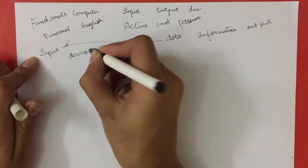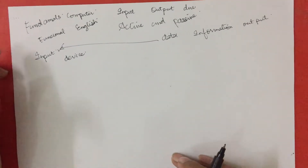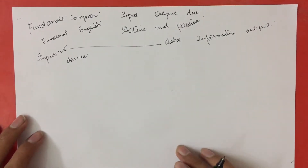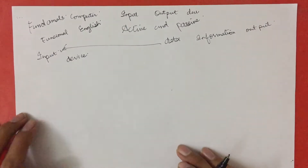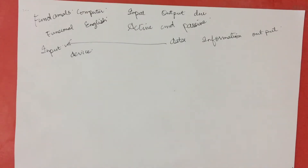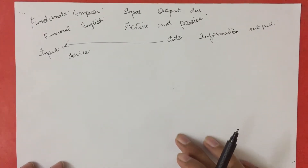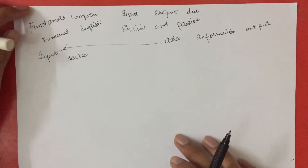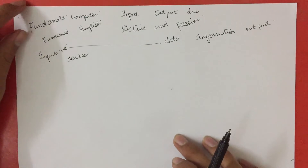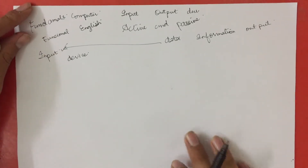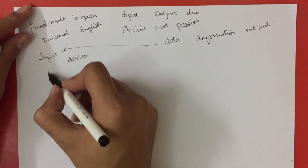What is an input device? Any hardware or software device which is used to enter the data into the memory of a computer is called an input device. Let's discuss some different types of input devices we use in our daily lives.